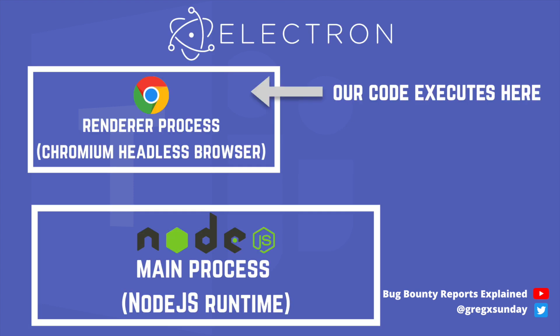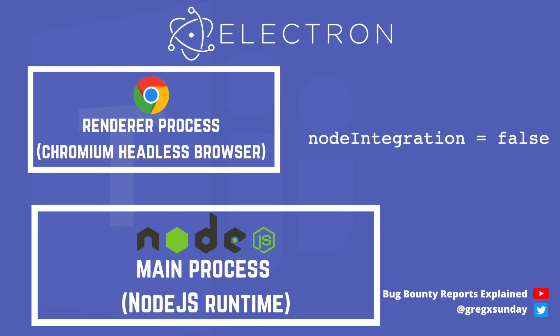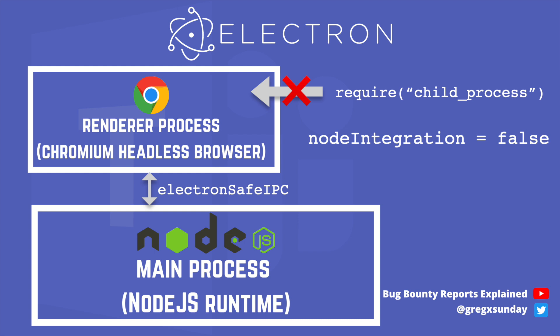But it was not easy because Teams was using Electron security settings like node integration equals false. It means there is a separation between the main process and the renderer in which our code executes. So even though we are able to write JavaScript code, we can't just import child_process and execute commands because we do not have access to all Node.js functions. We need to use Electron's safe IPC to communicate from the renderer with the main process, and to turn our XSS into an RCE, we need to use it to get access to Node.js functions.